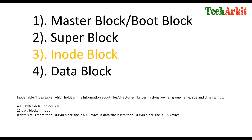If you say 15 data blocks, that equals one inode. If the data size is more than 100 MB, the block size is 4096 bytes. If the data size is less than 100 MB, then it is 1024 bytes. That is how inodes are maintained within the file system to identify where files and directories are located, along with their permissions, owners, group name, size, and timestamps.